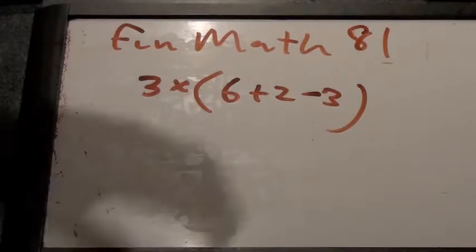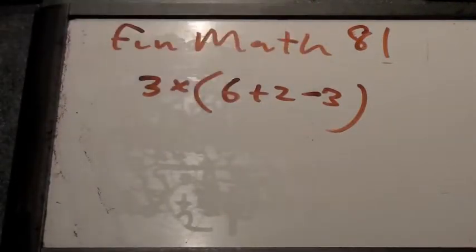That means when you have a simple arithmetic expression with something times something else in parentheses, there are now two ways we can evaluate this. What is the first way we can evaluate this?